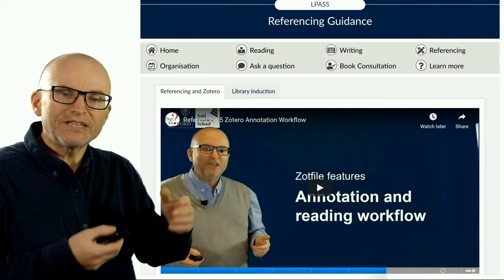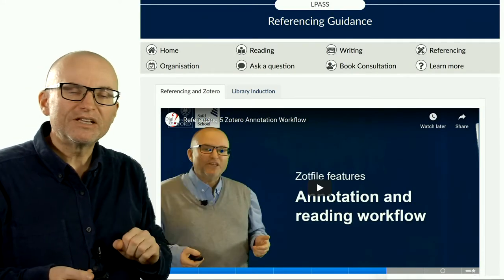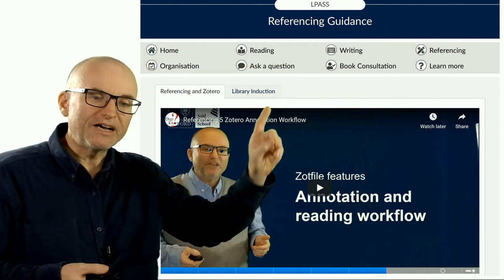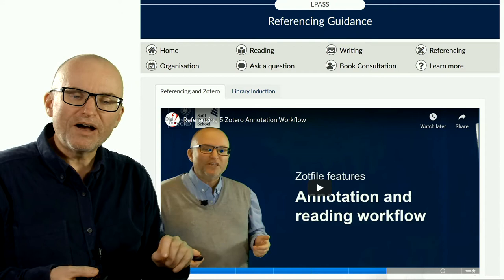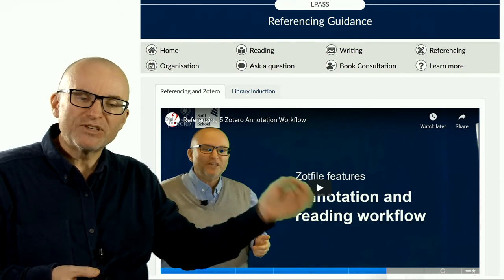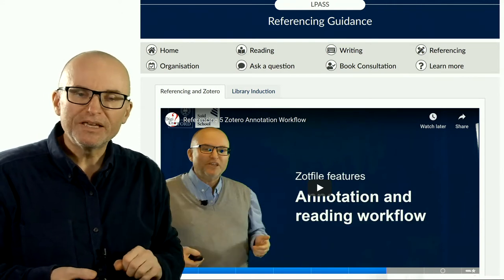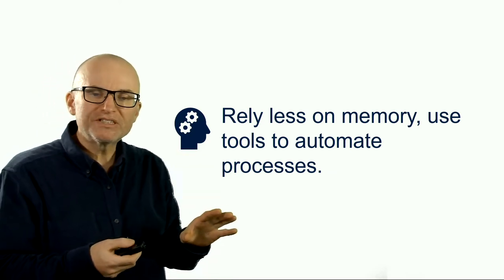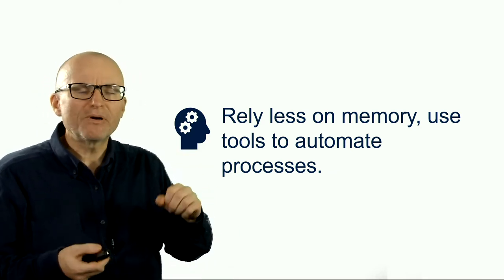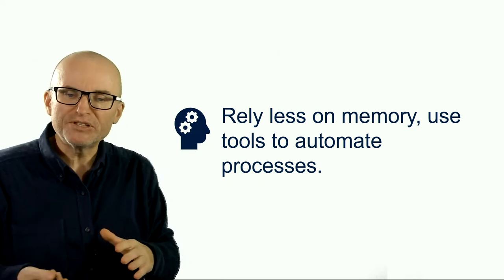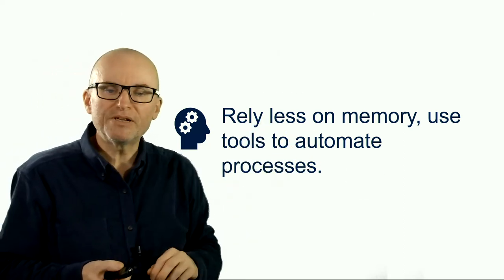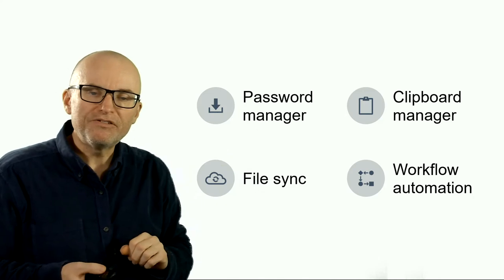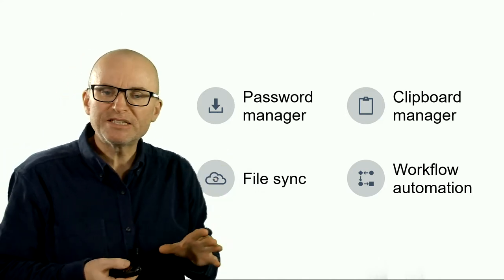For example, you can have a look at the Learning for Activity and Study Skills site on the referencing guidance — I made a video of how I have a workflow for getting annotations into my reference manager. What you're trying to do here is always rely less on memory: all I have to do is check 'have I copied this?' and 'have I put this in the right place?' — and use tools to automate the processes.